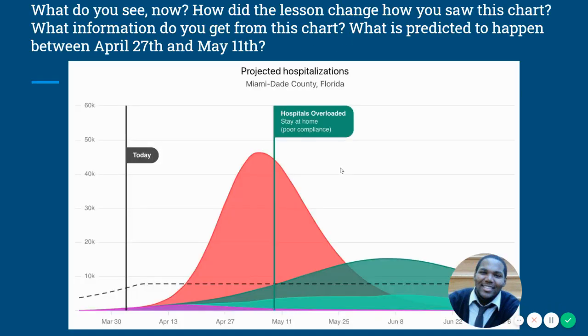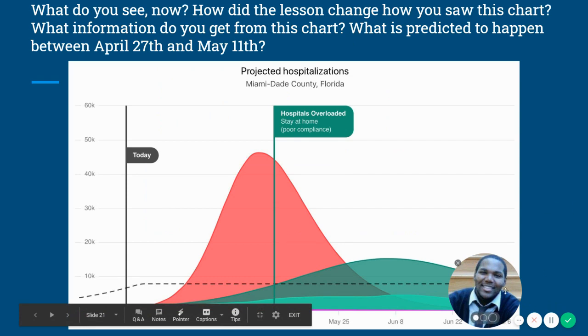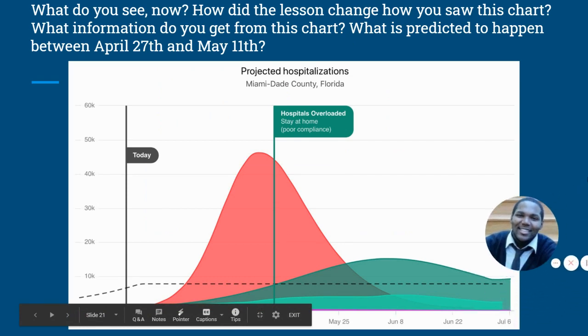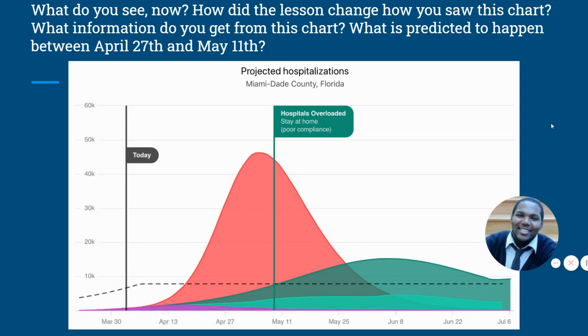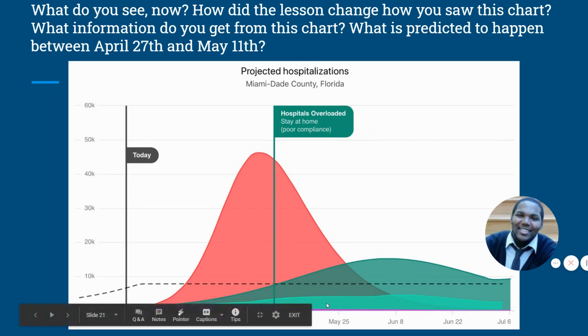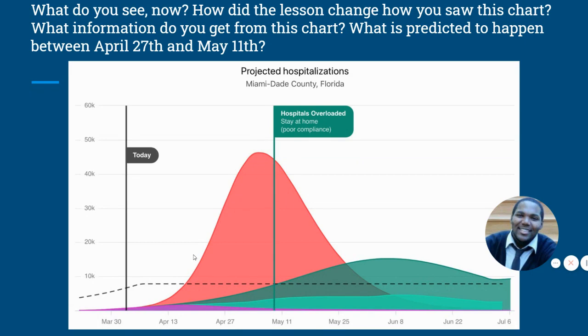So with that in mind, I want you to look at this data one more time. Give it another shot. What do you see now? Has anything changed since you last saw the chart? What information did you get from the chart? And lastly, what do you think is predicted to happen between April 27 and May 11? What do you think is going to happen between these days? What's showing up here? Remember that curvature I was telling you guys about. And we're just looking at the red, the big red hump.